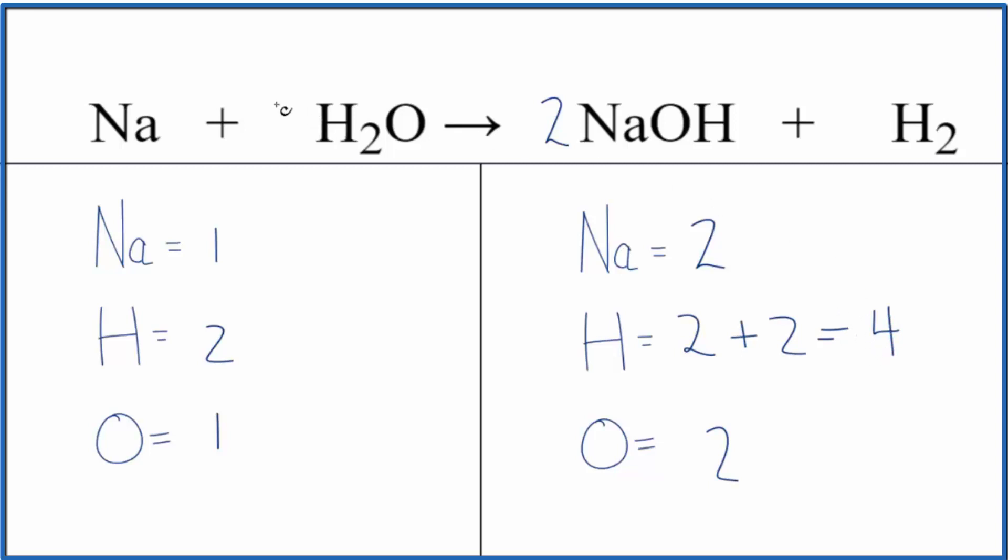If we put a two in front of the H2O, we have one times two for the oxygen atoms, so those are balanced. Two times two for the hydrogens gives us four.